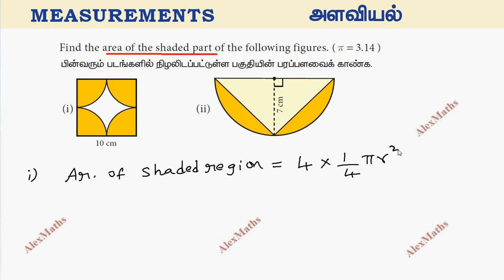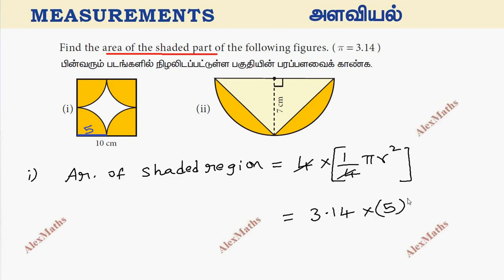This is the area of the shaded region. Pi is 3.14. The side is 10, so this is the area. Now we look at the radius. So total: 3.14 into 25.